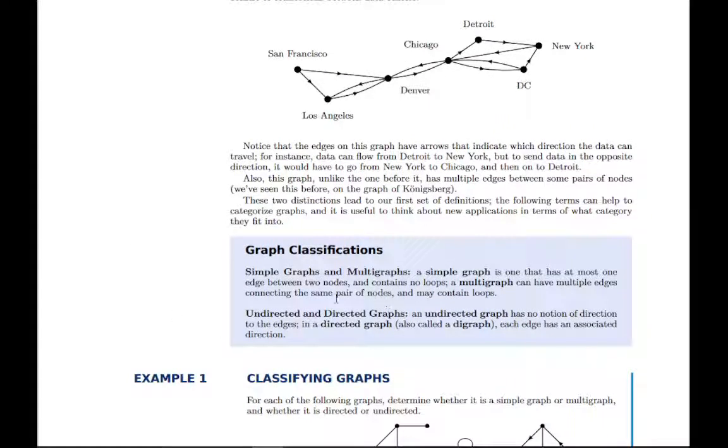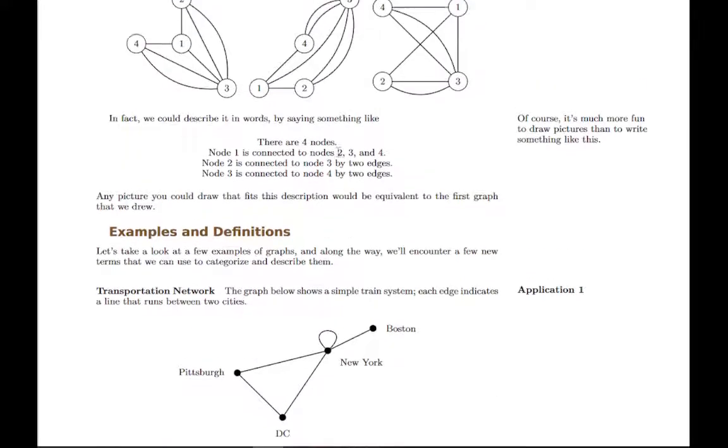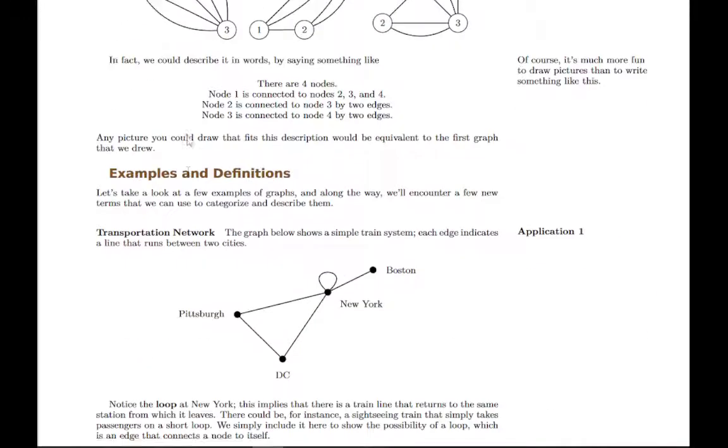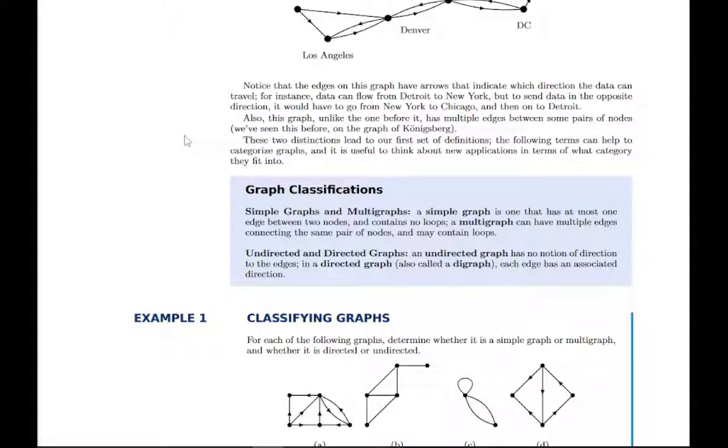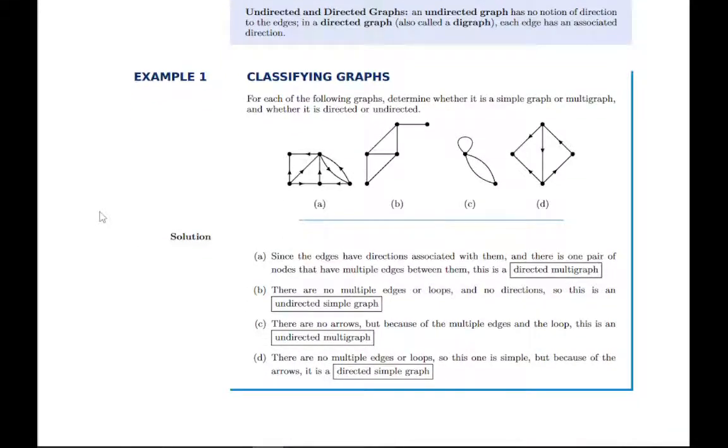There's terminology here. We have directed graphs or digraphs that have arrows or edges with a direction. Undirected is where you just have an edge with no direction or it could go either direction. There's also the term of a simple graph and a multigraph. A simple graph is where there's no duplicate edges and no loops. This one is not a simple graph because it has duplicate edges between some of the nodes. That's a multigraph.